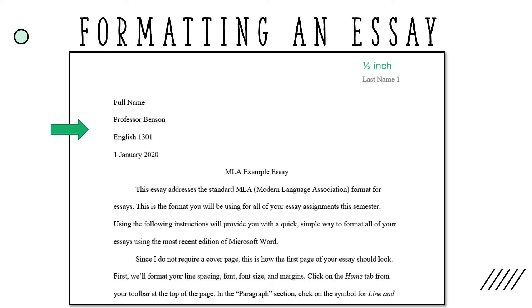In the upper right-hand corner of the page, one half inch from the top, you should add your last name, a single space, and the page number. These items should repeat in the header on each page of your essay, numbering each page consecutively.